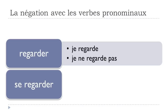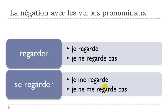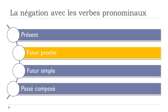Now with the verbe pronominal SE REGARDER, when you conjugate it you will get JE ME REGARDE. For the negative form, JE NE comes first, then you will have ME, then REGARDE, and finally PAS. So JE NE ME REGARDE PAS.